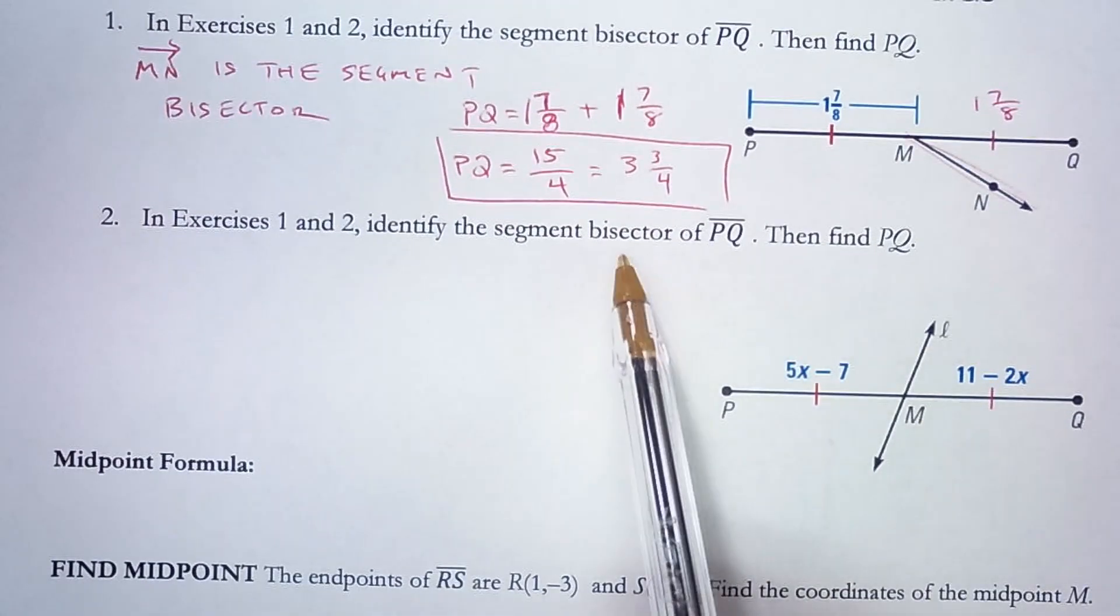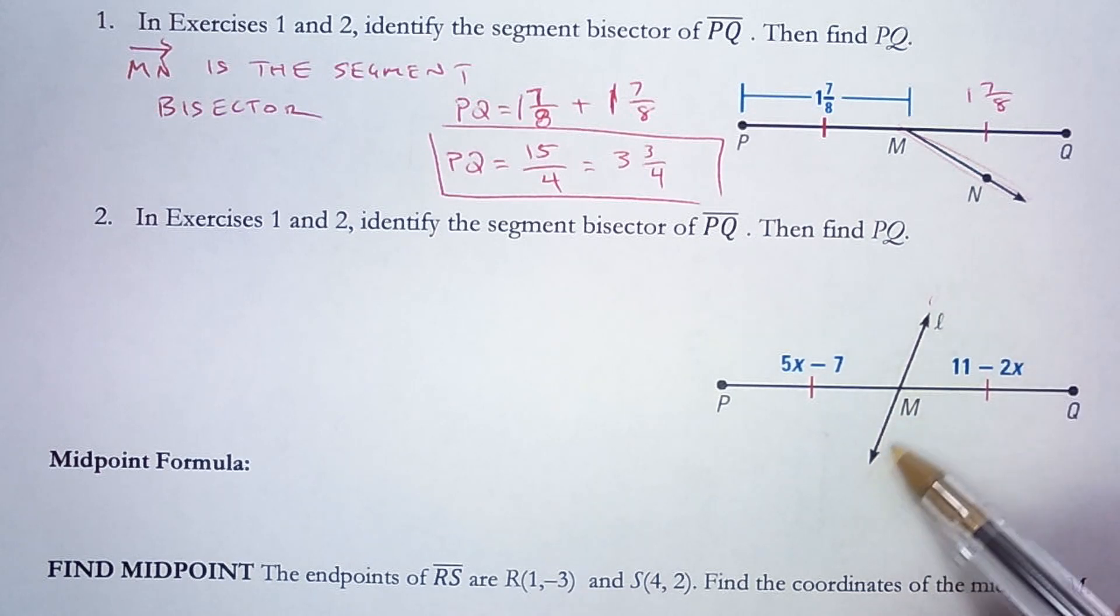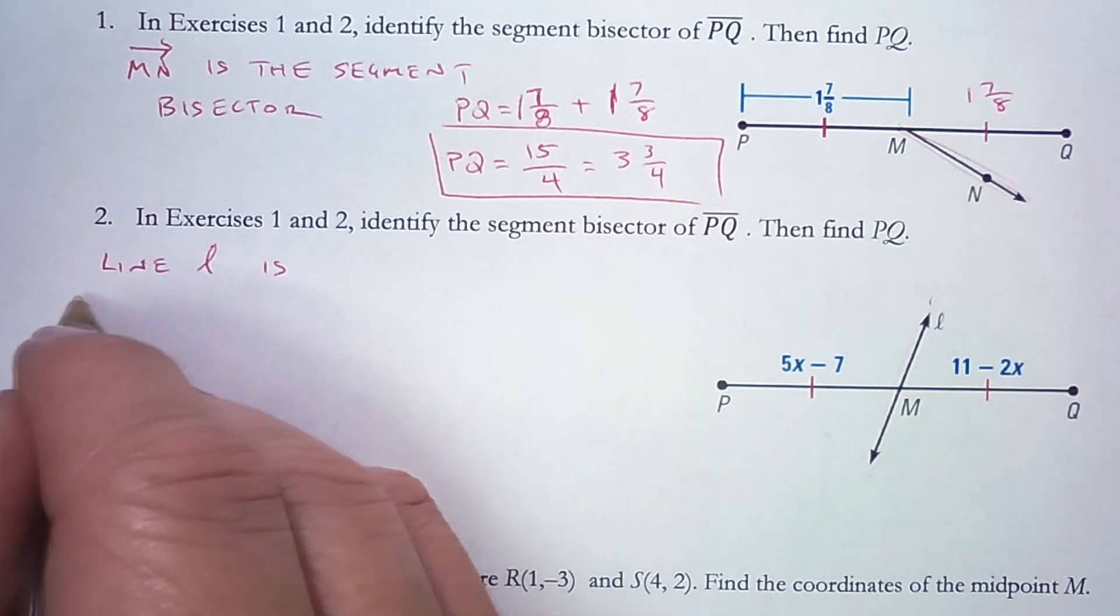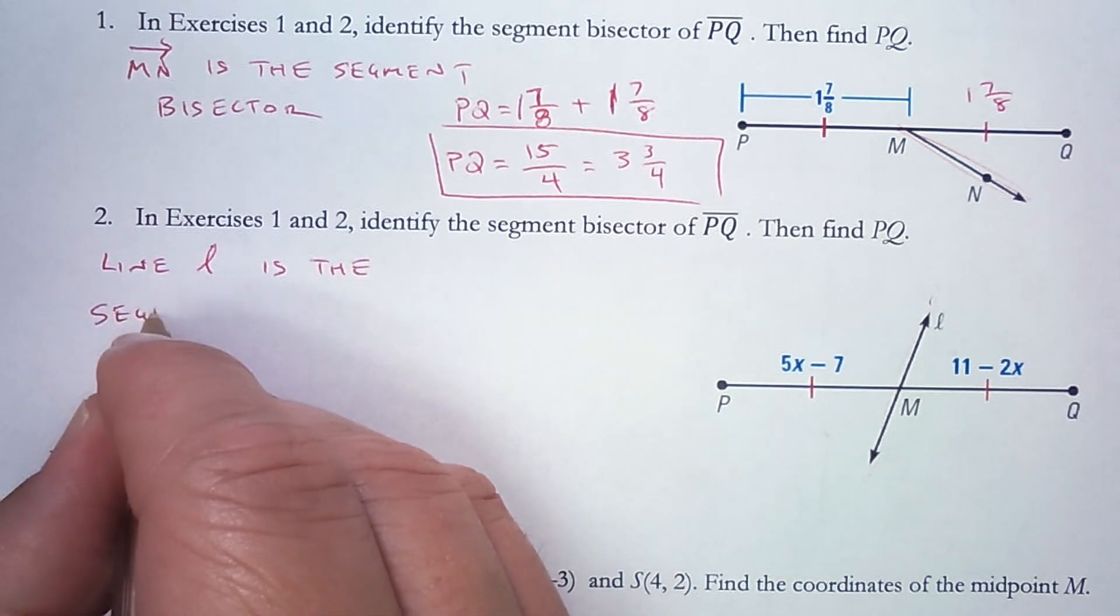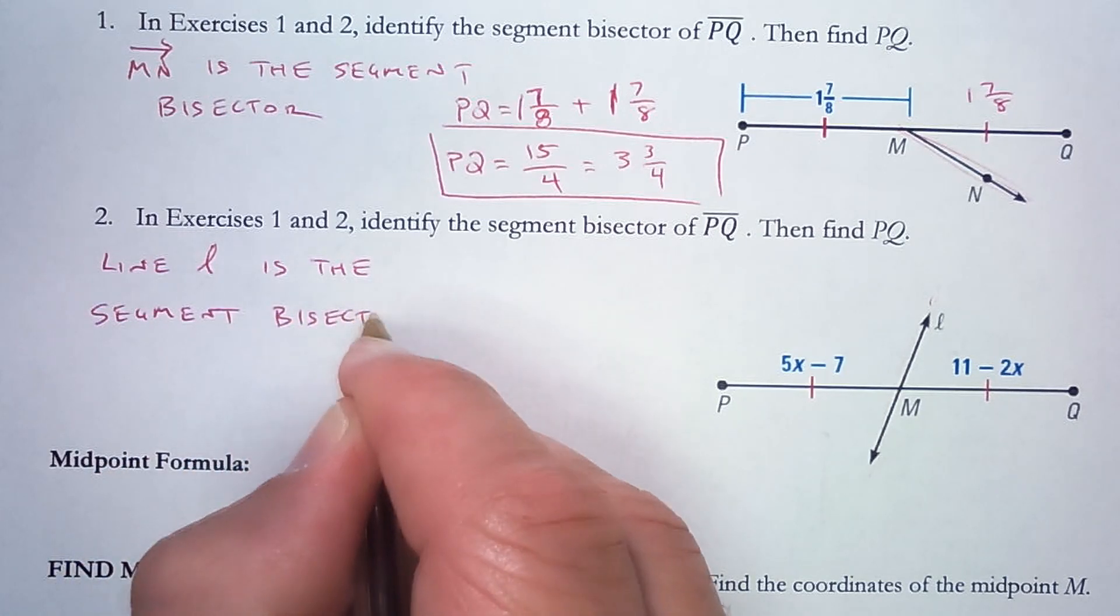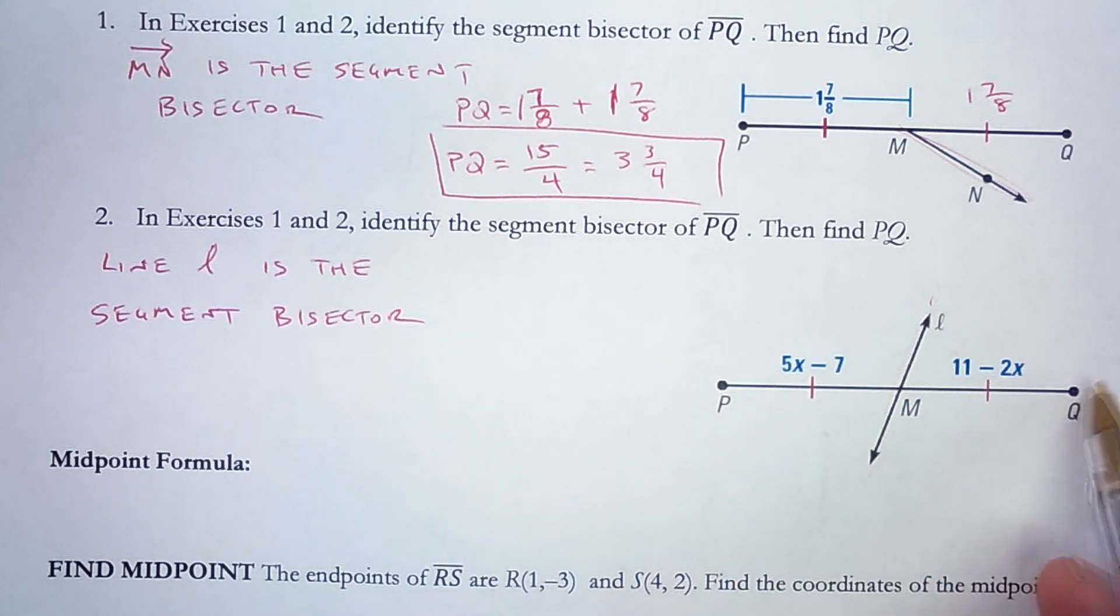Once again, identify the segment bisector of PQ. So that's right here. This line cuts PQ in half. Line L is the segment bisector. Then find the length of PQ.